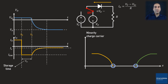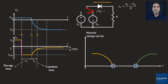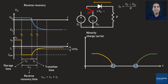Let's mark the time at which the reverse current gets within a 10% distance to the saturation current — I call this moment T2. The time between T1 and T2 is called the transition time T sub T. The process just explained is called the diode reverse recovery. In simple words, the reverse recovery time is the time required for discharging the minority charge carriers at the edges of the depletion region. I denote the reverse recovery time by T sub RR, and it equals T sub S plus T sub T.